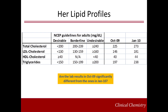This slide shows her lipid profiles in October 2009 and January 2010. In October, her total cholesterol was 225 mg/dL, LDL cholesterol 146 mg/dL, HDL cholesterol 40 mg/dL, and triglycerides 197 mg/dL. In January, her total cholesterol was 273 mg/dL, LDL cholesterol 181 mg/dL, HDL cholesterol 44 mg/dL, and triglycerides 138 mg/dL. The question is whether the lab results in October 2009 were significantly different from those in January 2010.